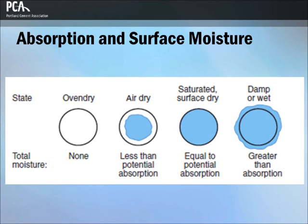Saturated surface dry, or SSD, is neither absorbing water from nor contributing water to the concrete mixture, equal to potential absorption. Damp or wet contains an excess of moisture on the surface, or free water. The amount of water added to the concrete batch plant must be adjusted for the moisture conditions of the aggregates in order to accurately meet the water requirements of the mix design.